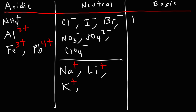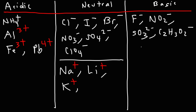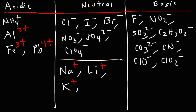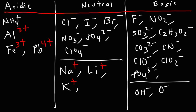Now let's go over the basic ions. HF is a weak acid, so the conjugate base of a weak acid is a weak base — thus fluoride is a basic ion. HNO2 is a weak acid, so NO2- is a basic ion. Other basic ions include sulfite, acetate, carbonate, cyanide, ClO-, ClO2-, and even phosphate — since H3PO4 (phosphoric acid) is a weak acid. There are also very strong bases: hydroxide (OH-), oxide (O2-), and hydride (H-).